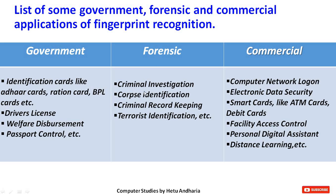In forensics, fingerprints are used for criminal investigation. As seen in crime shows like CID and Crime Patrol, whenever any crime takes place, the first thing done is collecting fingerprint samples. Other forensic uses include cops identification and criminal record keeping. Whenever a criminal is caught, their fingerprint patterns are stored in a database, so when another crime is committed, police compare the fingerprints at the crime scene with existing criminal fingerprints. It is also used for terrorist identification.